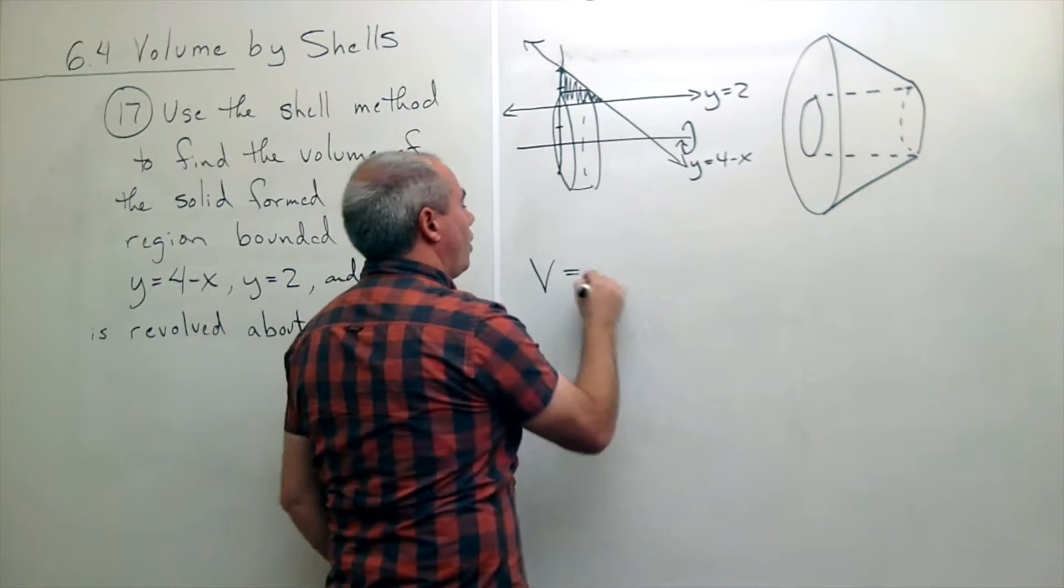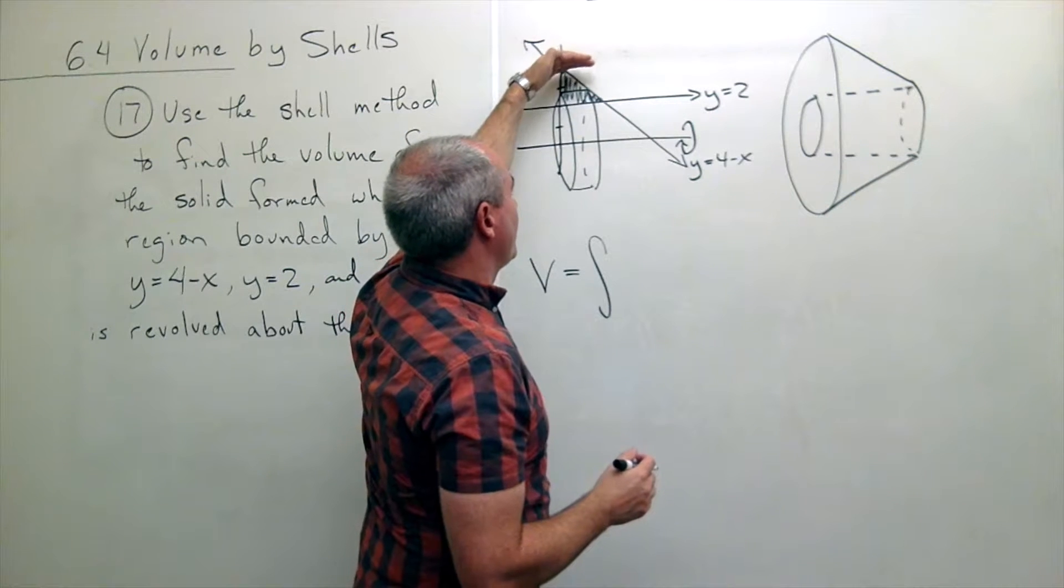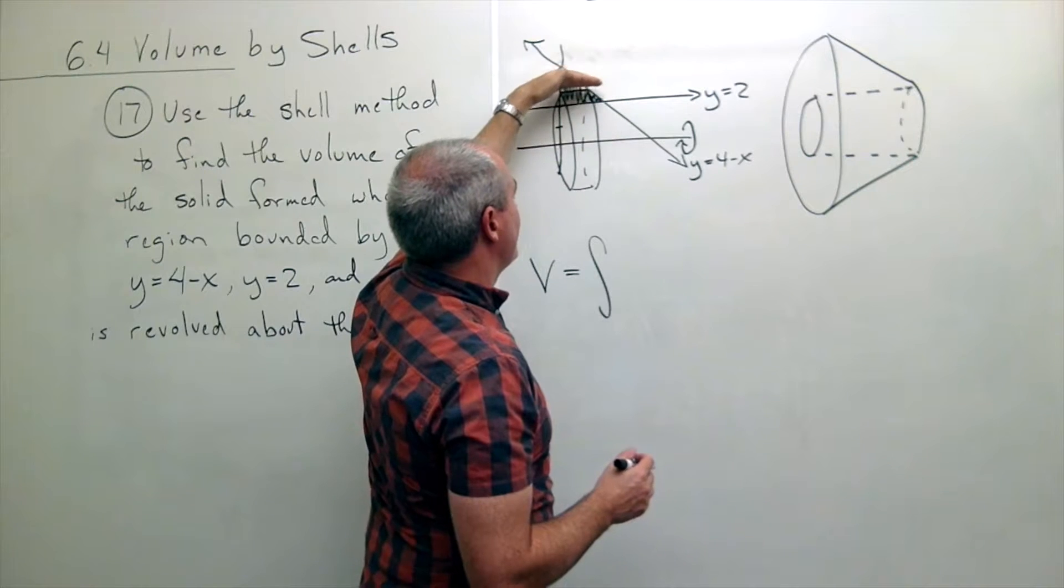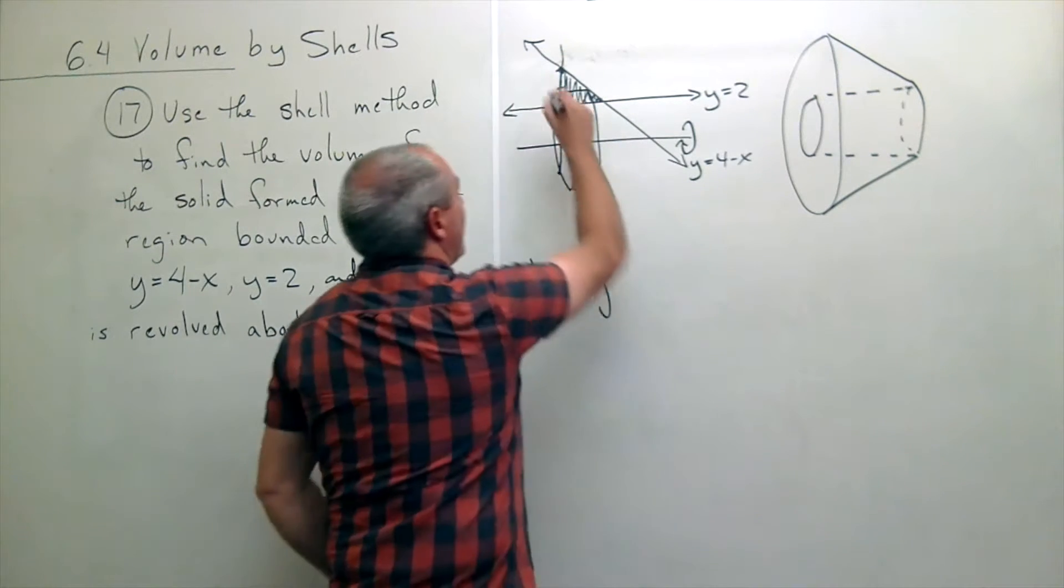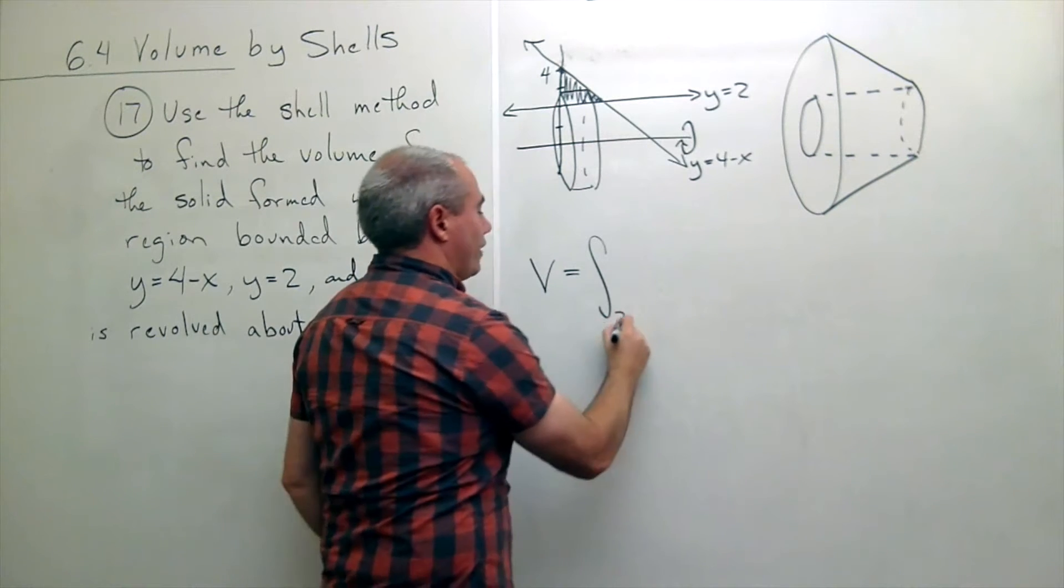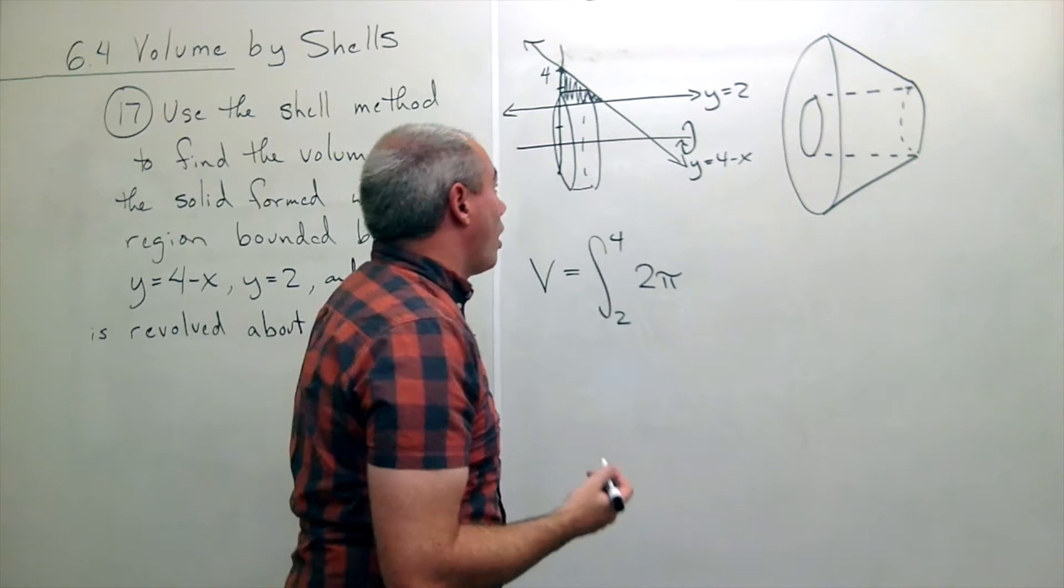So if I want the volume here, I'm integrating from a y value to a y value, and I think it's clear here, I would start chopping at two, and I would stop chopping when I got up here to four.